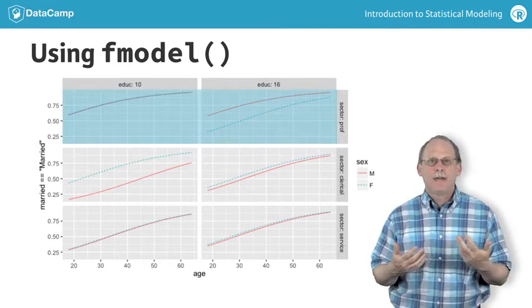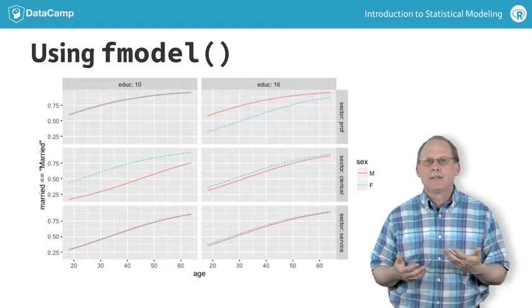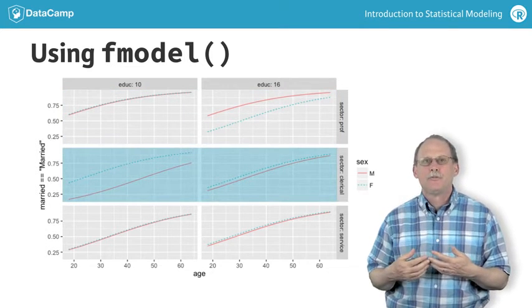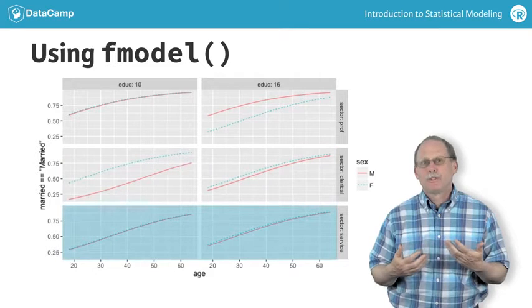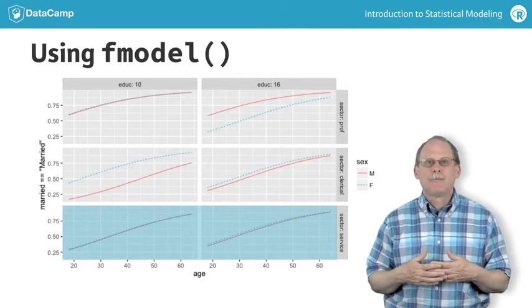You can also see that there are some systematic differences in marriage probabilities for males and females. For professional sector workers, males are more likely to be married than females. The opposite is true for clerical workers. For service workers, the probability is about the same for both sexes.